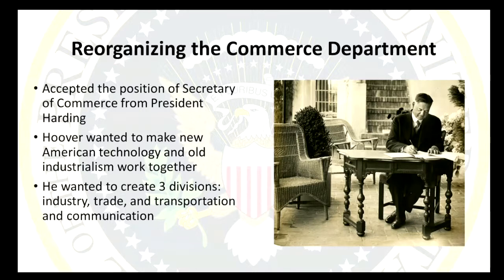Hoover wanted to make technology and industrialism work together. He wanted to create three divisions: industry, trade, transportation, and communication. He was really interested in how we could regulate radio, cars, aviation, businesses, and how we trade with other countries. He thought it was important that we raise living standards — where we live, how much money we make, what kind of food we eat, what access to schools we have — and he wanted to make industry and business feel less scary.